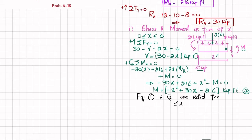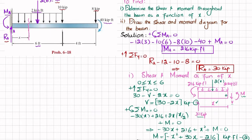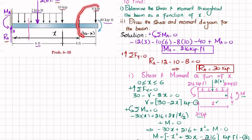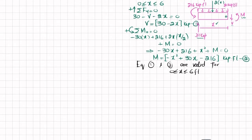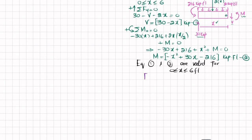Equations 1 and 2 are valid for x greater than or equal to 0 and less than or equal to 6 feet. Now we cut the beam for the region 6 < x ≤ 10 feet. Here x represents the total distance from A, and the remaining distance to the free end is 10 minus x. We draw the free body diagram of the right-hand portion for this region.